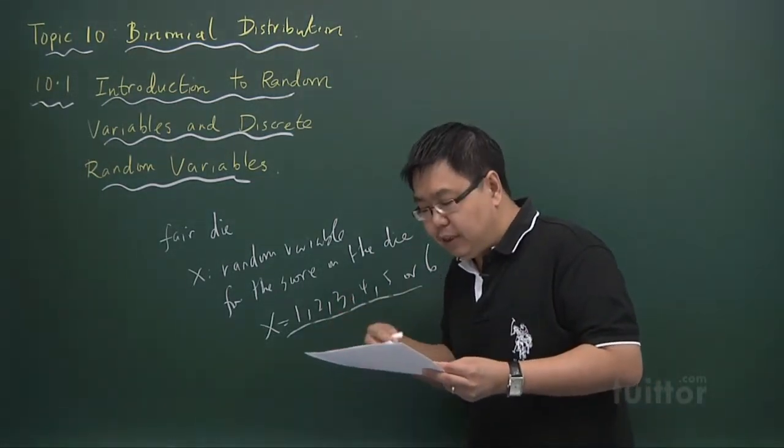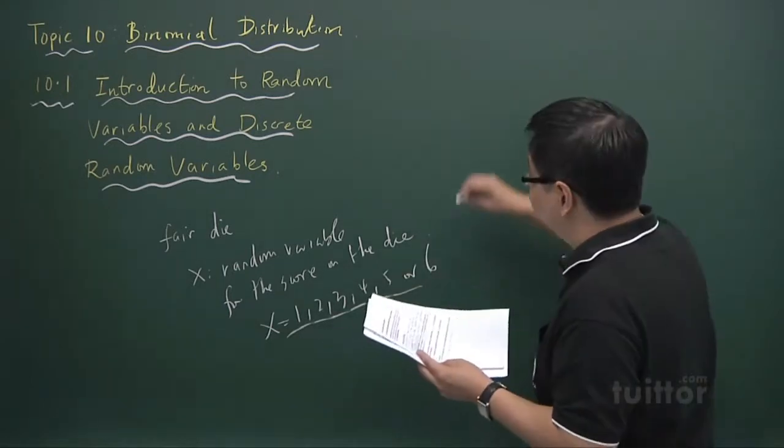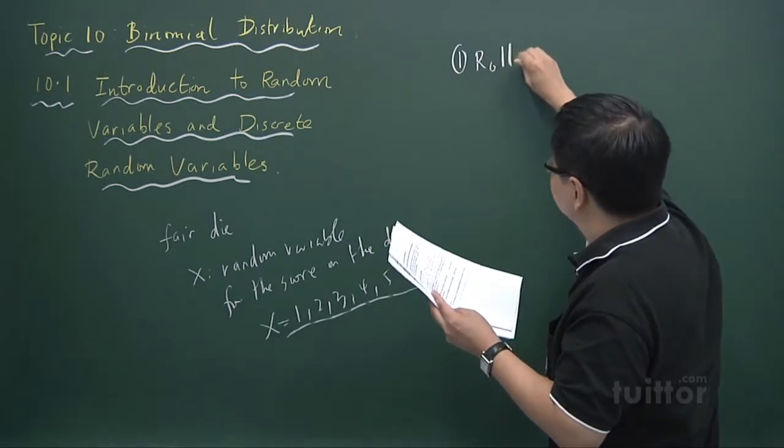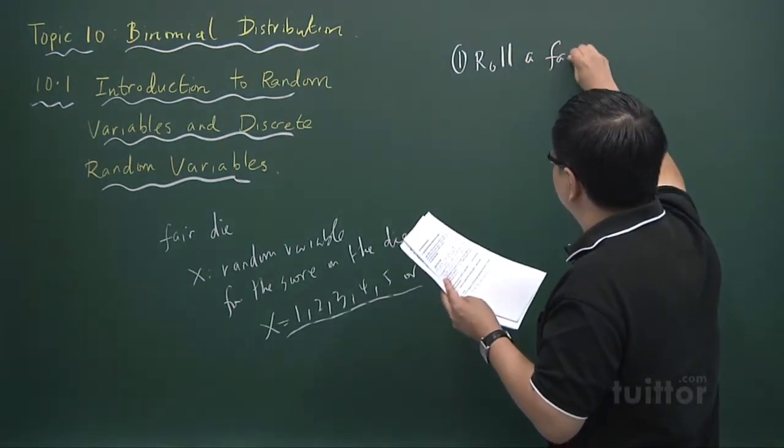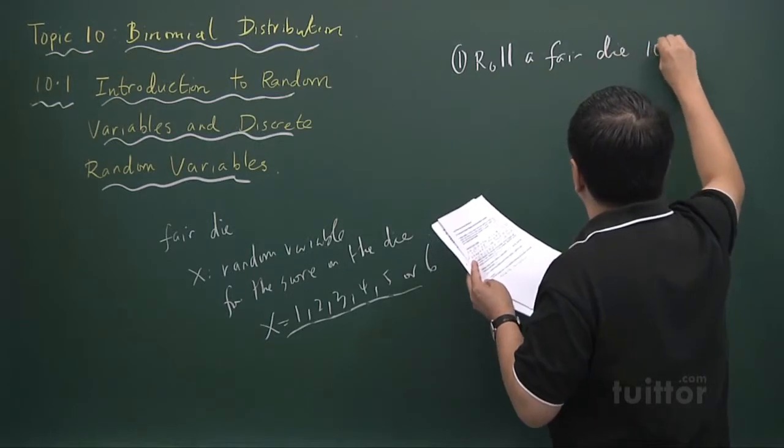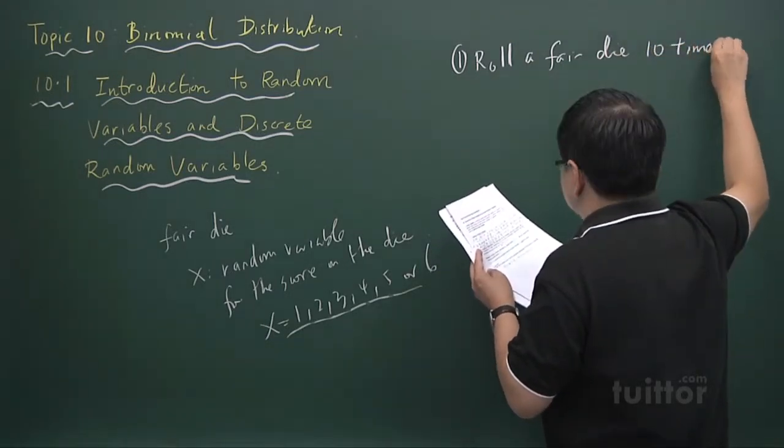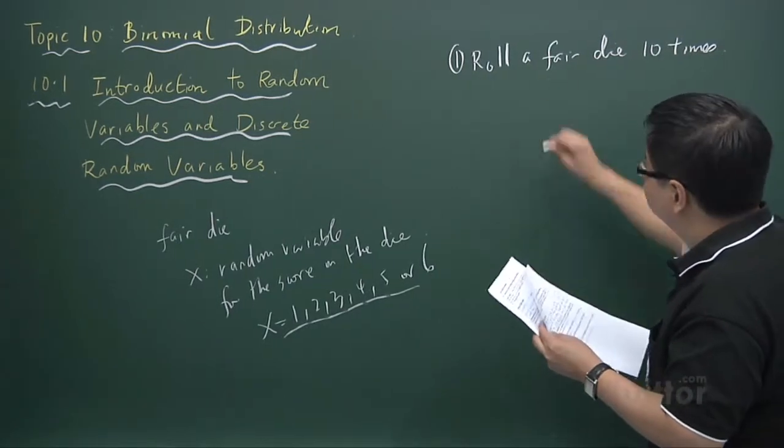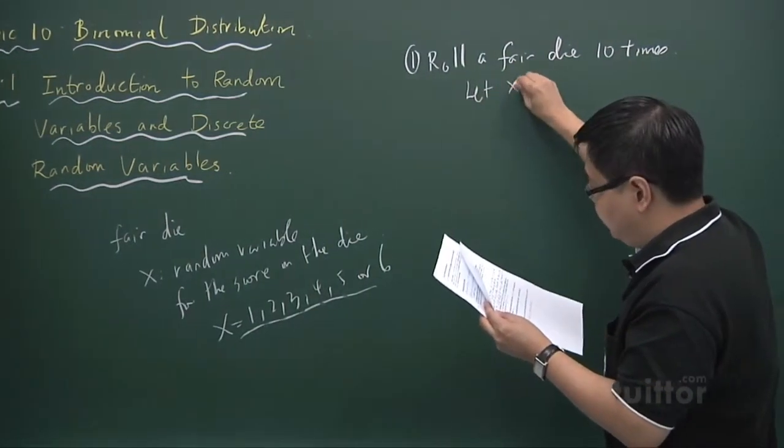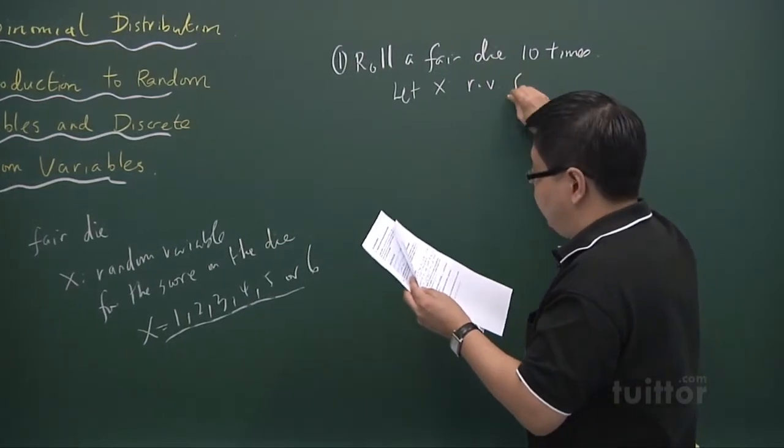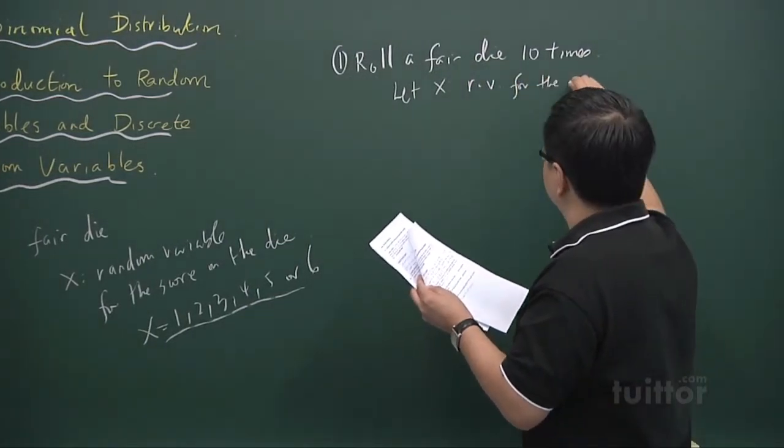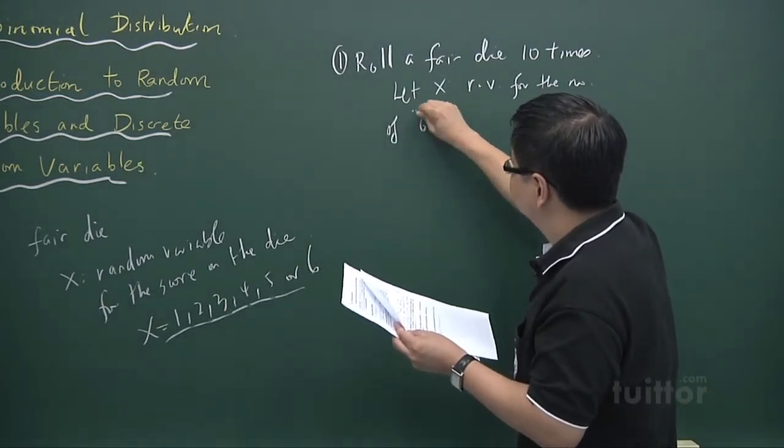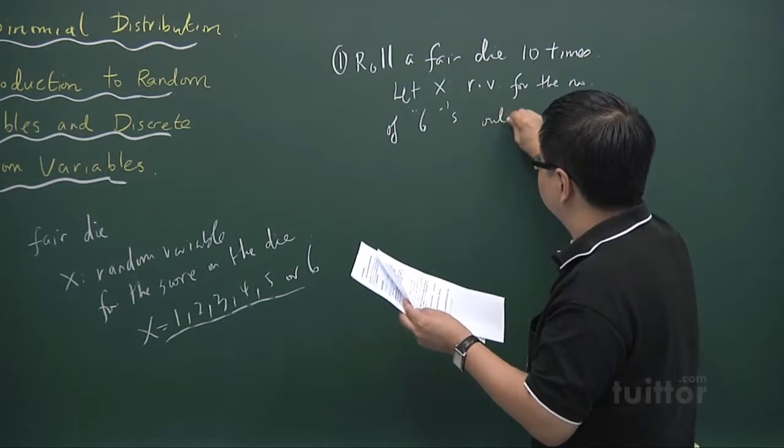Now let's take a look at some examples of random variables. You can actually give suggestions like, say you roll a die, say a fair die, 10 times. And we let x to be the random variable for the number of 6's out of 10 throws of the die.